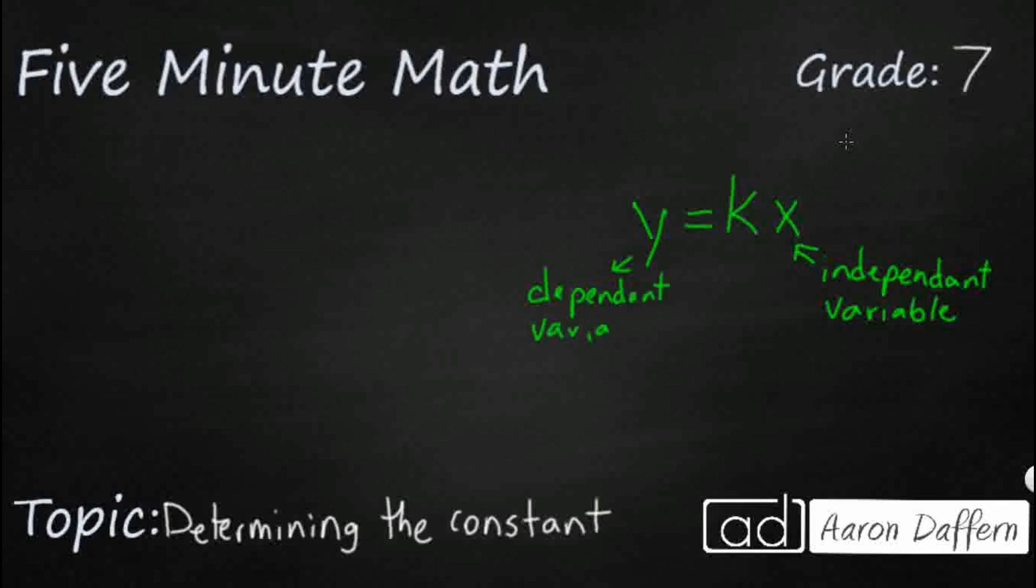Rarely does it stay exactly the same. And that change is this right here. So let's talk about this k. This is what we are doing to our independent variable, and it goes by many names. So it is our constant. Sometimes it is our constant rate or constant ratio. Sometimes we'll just call it the rate of change.